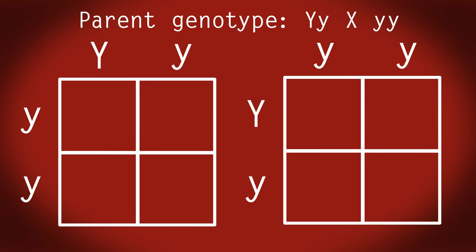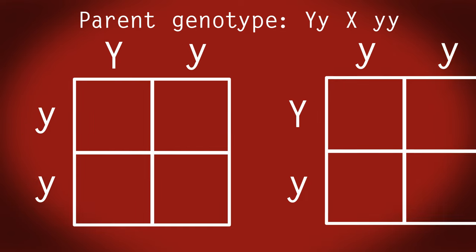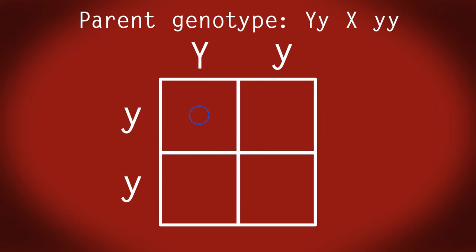It doesn't matter which parent you put where, both are correct. So these are the parent's genotypes, and these are going to be the possible offspring genotypes. Let's fill in the gaps. I'll do the first one for you. Dominant Y and recessive y gives Yy. Can you complete the rest of the Punnett square?